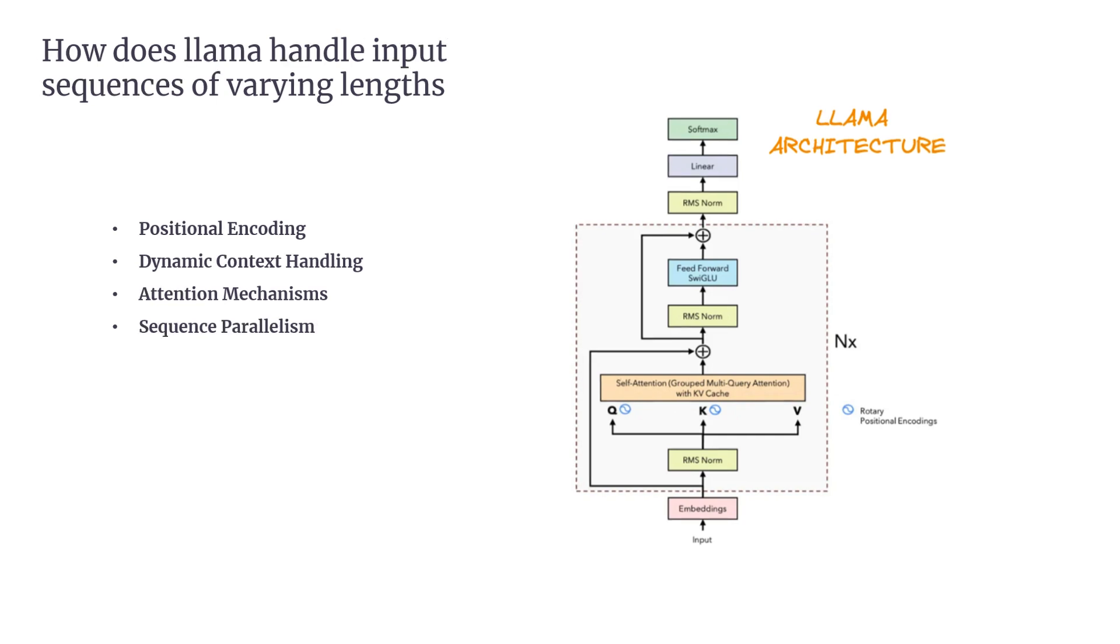The fourth, Sequence Parallelism. To fine-tune on very long sequences, LLAMA introduces sequence parallelism. In this approach, a single long sequence is split across multiple GPUs. This distributes the memory load and reduces the GPU memory footprint, allowing the model to handle much larger sequences during training without running into memory issues. In summary, LLAMA is designed to be flexible and efficient, adapting its processing depending on the sequence length and available computational resources, which makes it effective across a wide variety of natural language processing tasks.